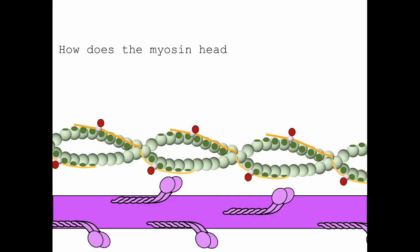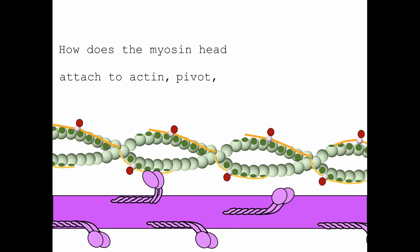You're probably wondering how does the myosin head attach to actin, pivot, detach, and reset? Let's go through that now.